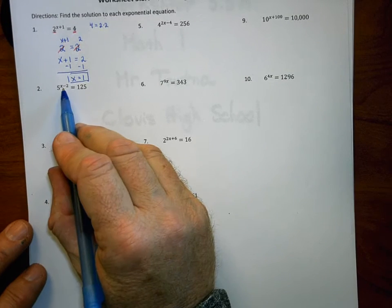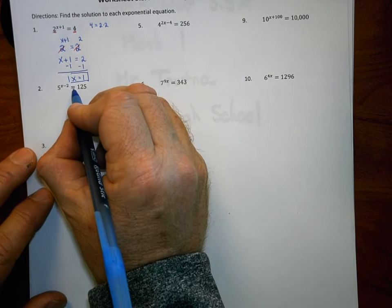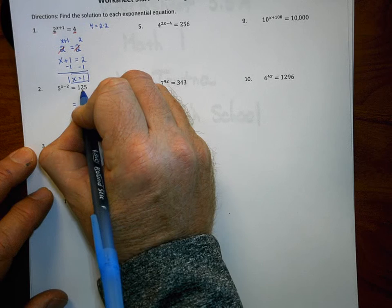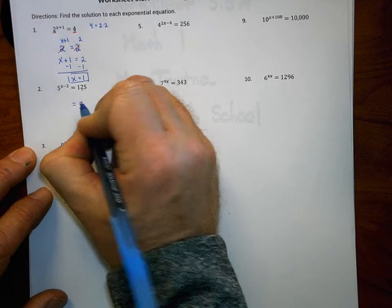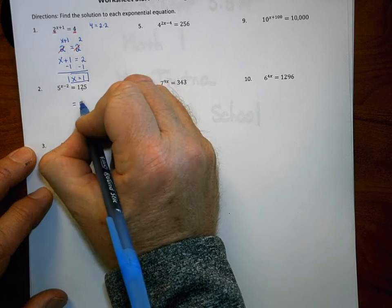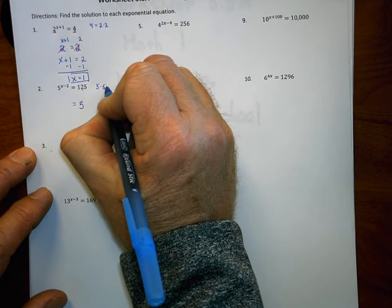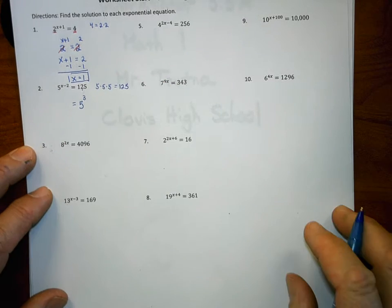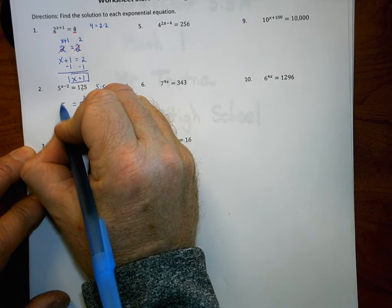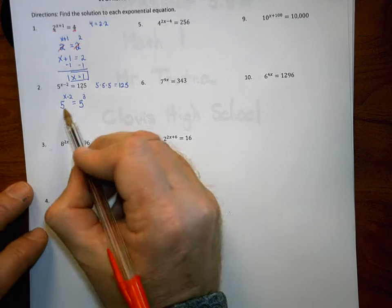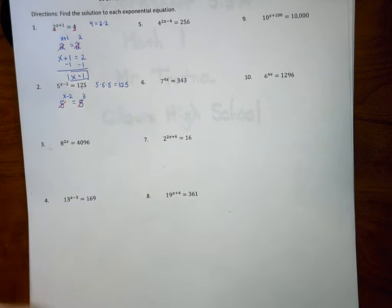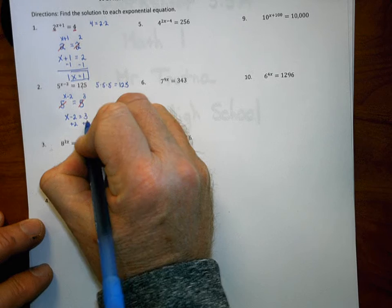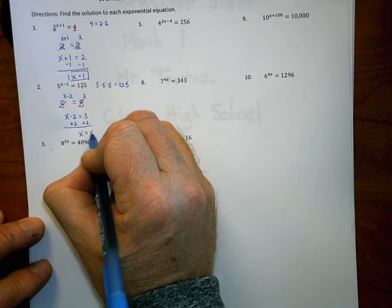In number 2, we have 5 to the power of x minus 2 is equal to 125. The strategy is to make both sides have the same exact base. Go to the larger side, which is 125, and make it a base of 5. 5 to the what power is 125? Well, 5 times 5 is 25, and 25 times 5 is 125, so 125 is 5 to the third power. Once the bases are the same, they cancel out, leaving x minus 2 equals 3. The solution to number 2 is x equals 5.